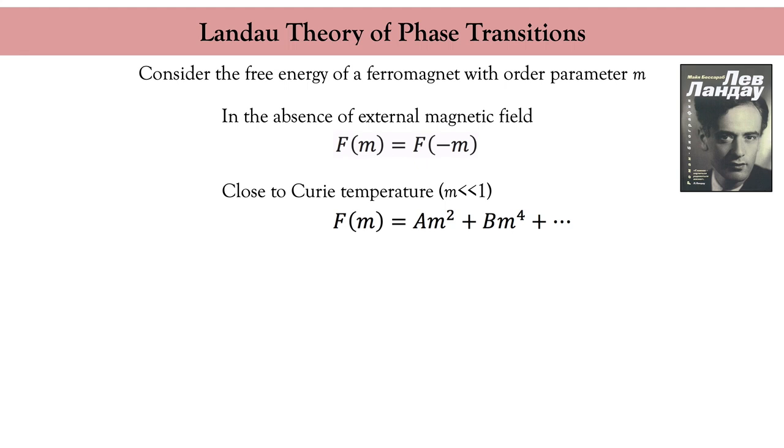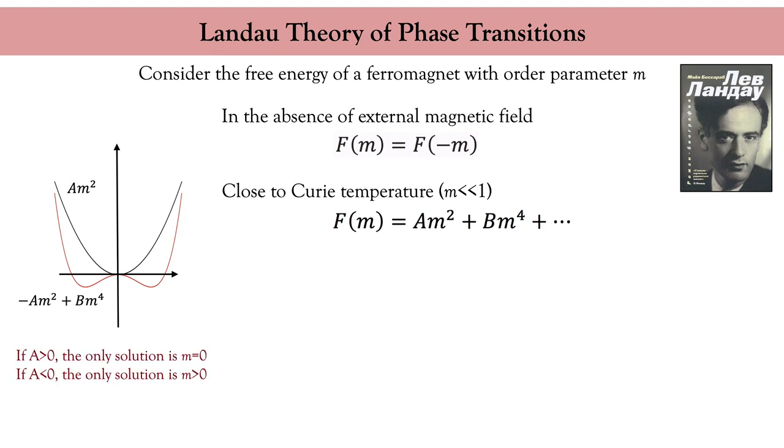Let's analyze this super simple polynomial graphically. If A and B are both positive I obtain the black curve and minimizing the energy gives me the solution M equals zero. So a priori this polynomial describes the solution of my ferromagnet above Curie temperature. Now if A is negative but B remains positive I obtain the red curve and minimizing the energy gives me a non-zero magnetization M. In other words, this polynomial describes the solution of my ferromagnet below Curie temperature.